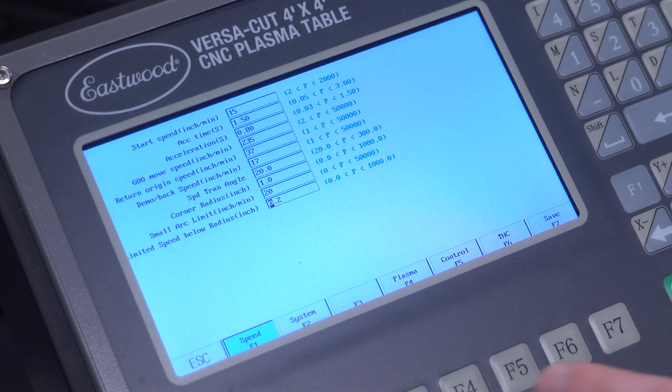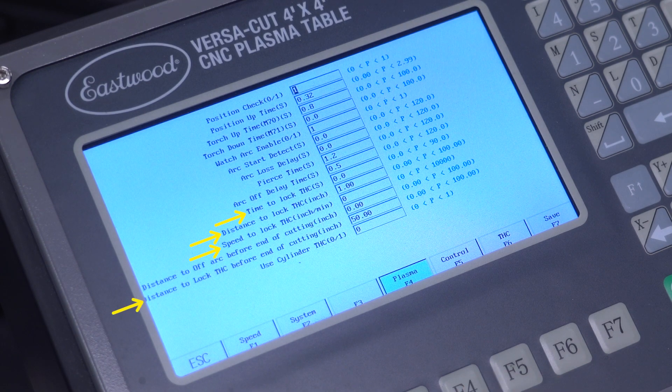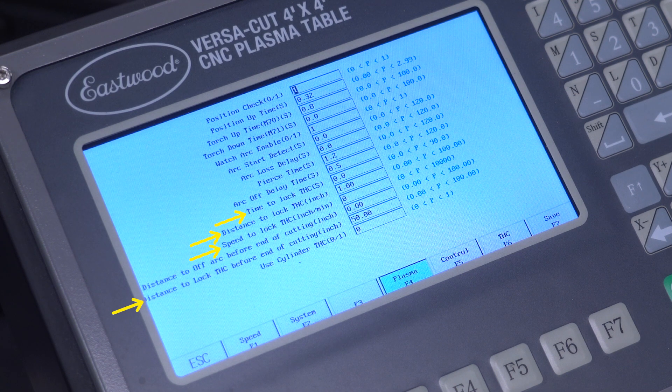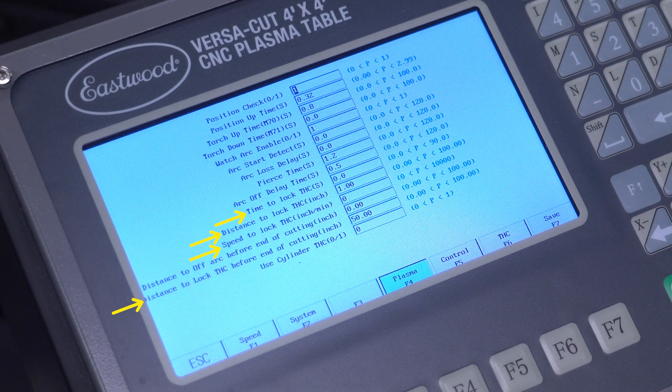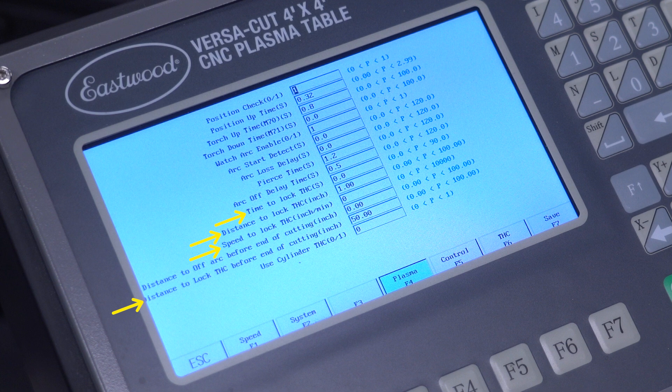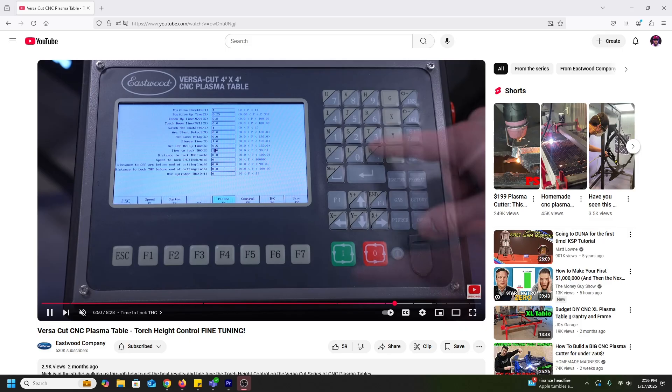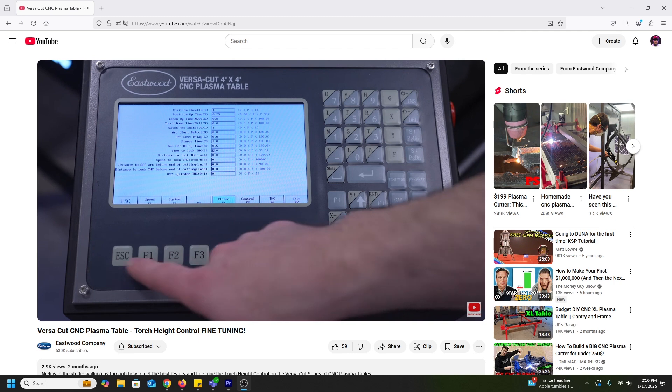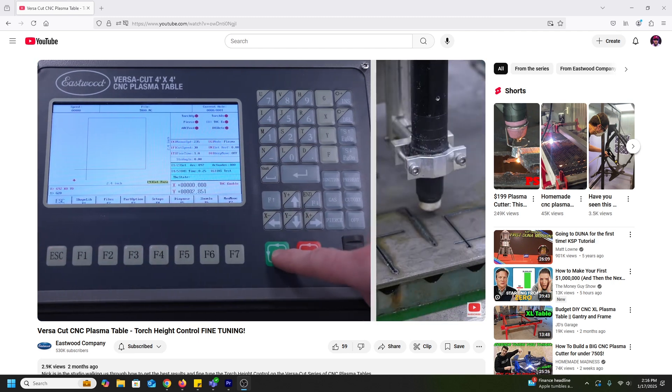In F4 plasma the only thing to check out is for dialing in the auto torch height control. Some of these settings down here can be useful if the torch plunges at the beginning, during corners, when it slows down, or at the end of a cut. Again check out our video on the automatic torch height control. I talk briefly about these at the end.